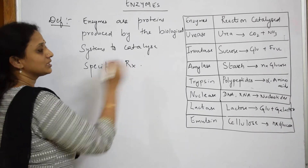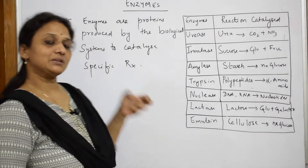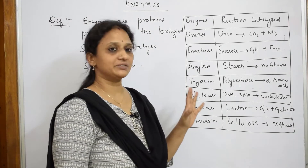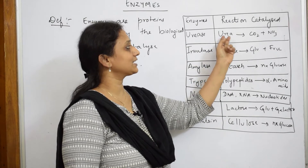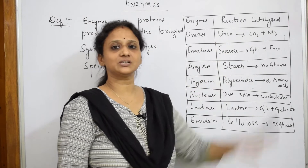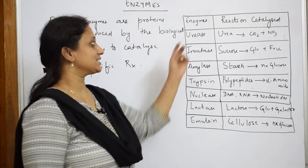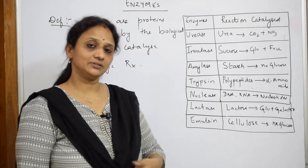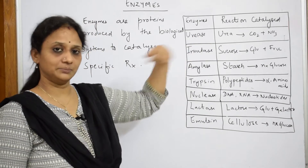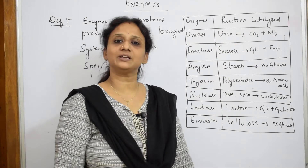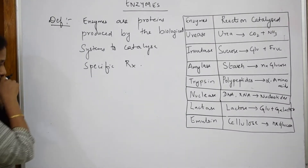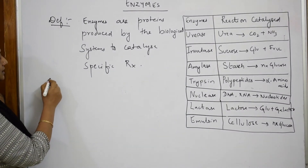Enzymes are also a form of protein. For example, consider the reaction where urea has to be converted to carbon dioxide and ammonia. To carry out this reaction, you need an enzyme — a biocatalyst called urease. Only with urease will this particular reaction proceed to form carbon dioxide and ammonia.